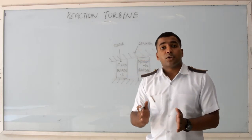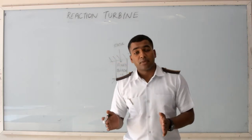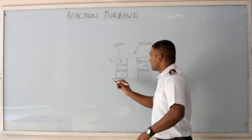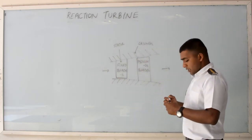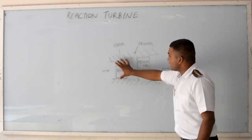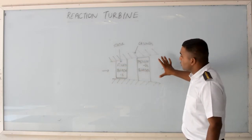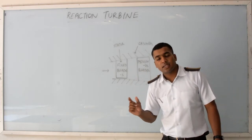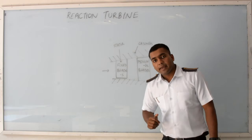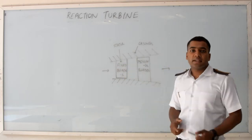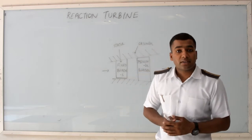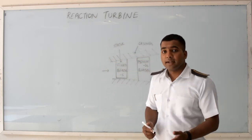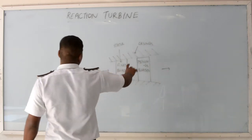In the Reaction Turbine, the area between two consecutive blades does not remain the same — it is of converging type. As you can see from the diagram, this is the inlet and this is the outlet, and the area is of converging type, changing from inlet to outlet. Since pressure is inversely proportional to area, the changing area means the pressure will change everywhere. That is why in a Reaction Turbine, the pressure changes in both the stationary blade and the moving blade.